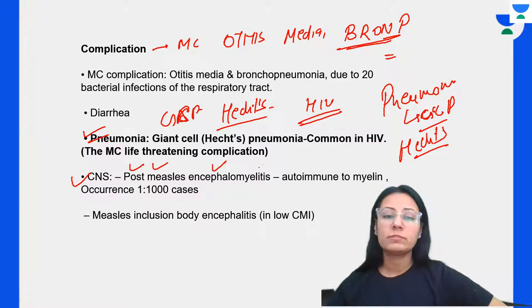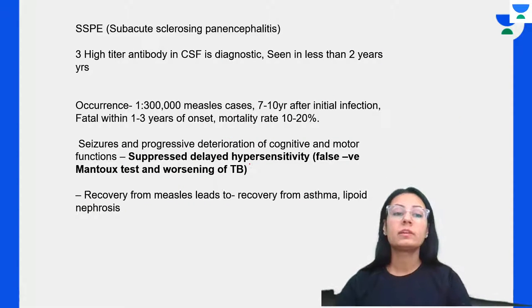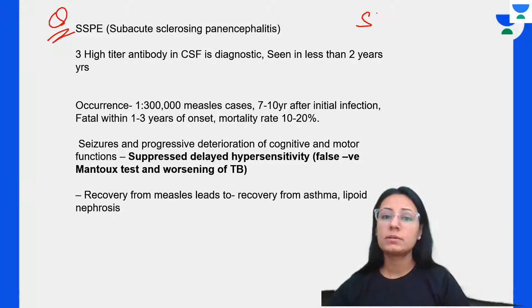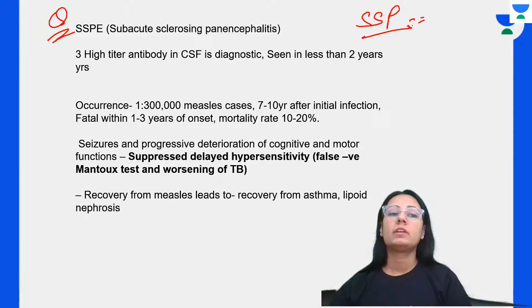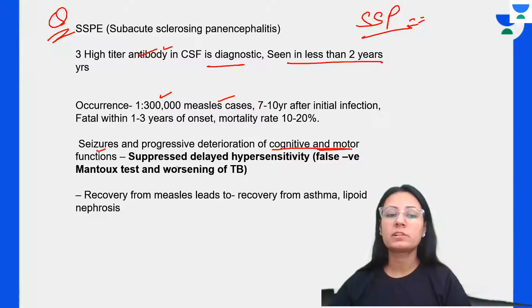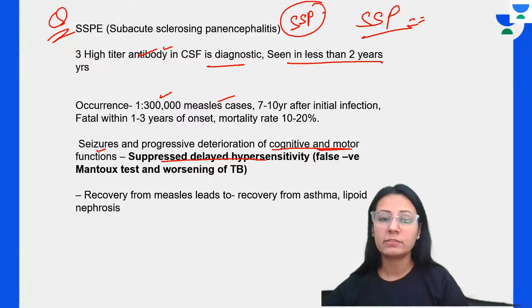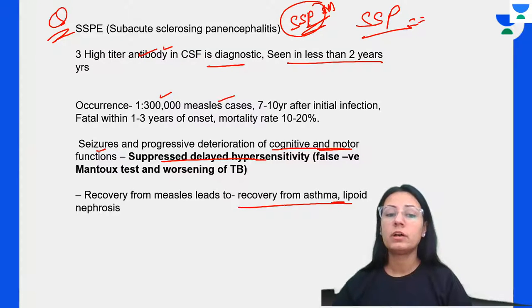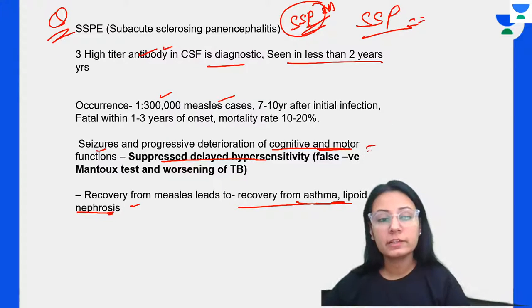CNS complications include post-measles encephalomyelitis, measles inclusion body encephalitis (seen in low CMI conditions), and subacute sclerosing panencephalitis (SSPE). SSPE: high-titer antibody in CSF is diagnostic; occurs 2 to 3 years after measles; features seizures and progressive deterioration of cognitive and motor function, causing suppressed delayed hypersensitivity. Recovery from measles also leads to resolution of asthma and lipoid nephrosis. Negative anergy is seen — Mantoux test becomes negative, and there is worsening of TB cases.